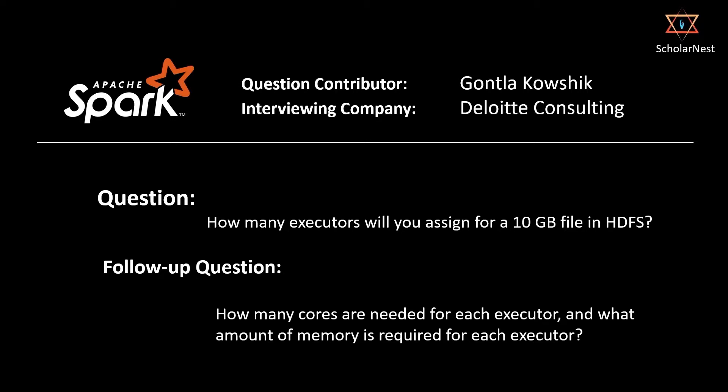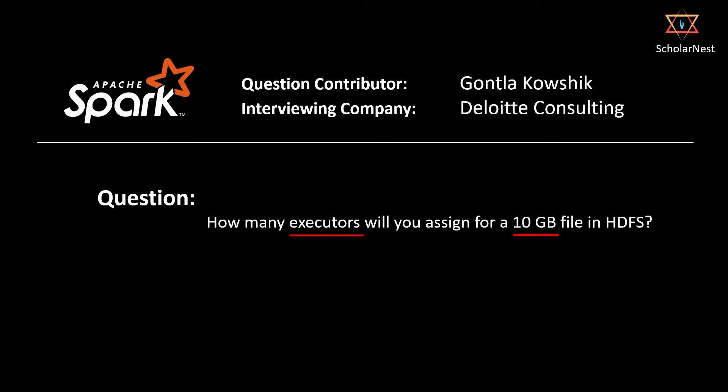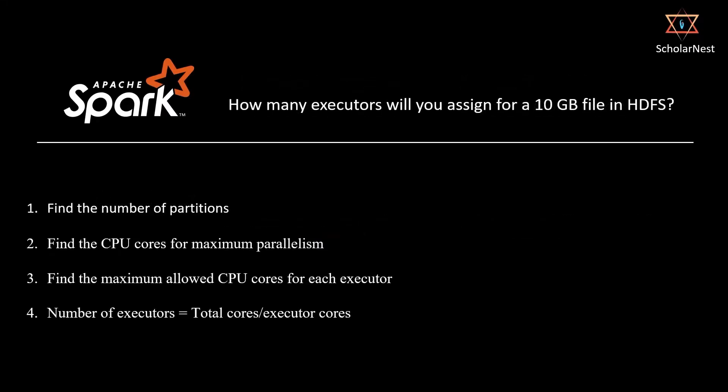Let's try to dissect the question. We have two critical things: executors and a 10 GB file in HDFS. The interviewer tells us the data volume and asks about the required number of executors. Here is the roadmap: find the number of partitions, then find the CPU cores for maximum parallelism, then find the maximum allowed CPU cores for each executor. Finally, the number of executors equals total cores divided by executor cores.